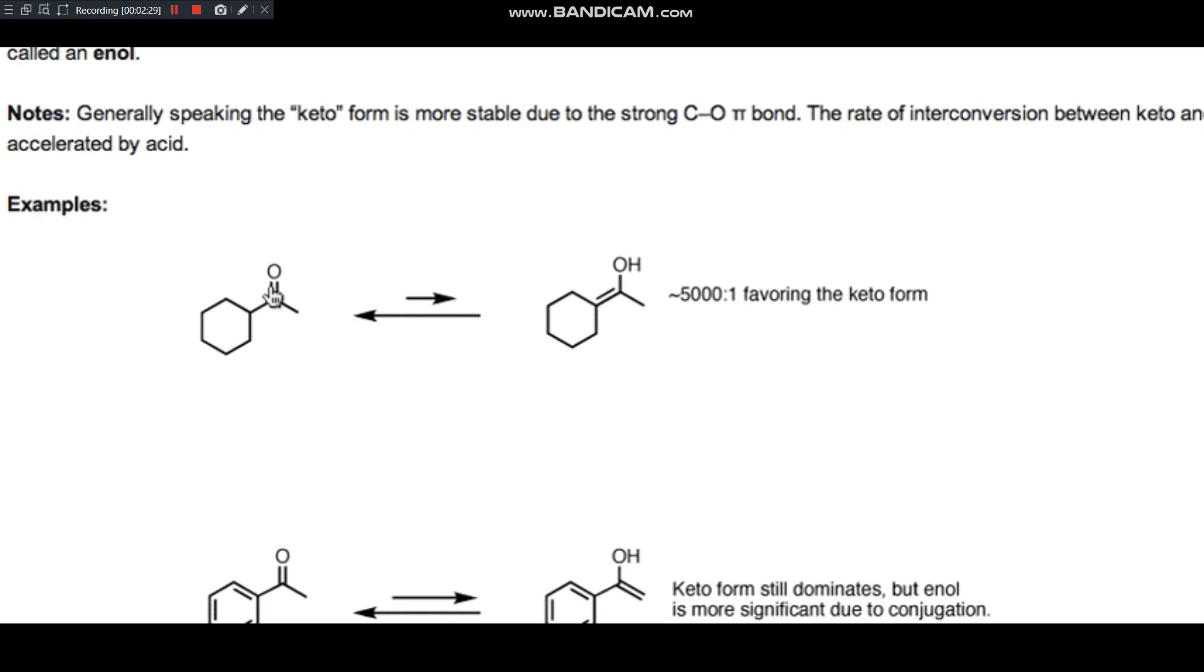In general, you look at most keto form favoring the enol form in the vicinity of 5,000 to 1. So for every one equivalent of enol, you've got about 5,000 molecules of the keto form. And here's a pretty typical example. Let's look at this ketone here. We're going from the ketone on the left to the keto form in equilibrium with the enol on the right.